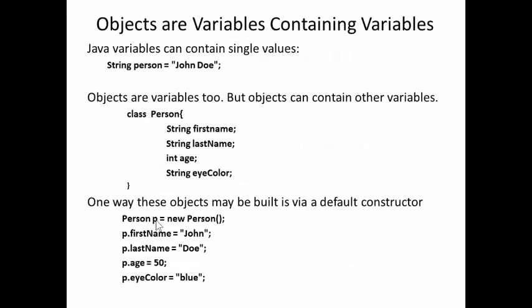Objects are variables containing variables. Java variables contain a single value. For example, the string person is assigned John Doe. So the person in this case is simply the string John Doe. But objects are variables that can contain other variables.